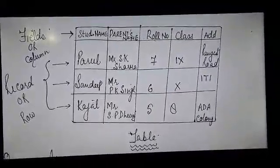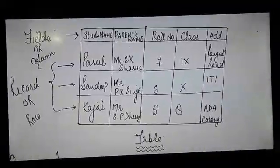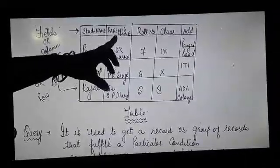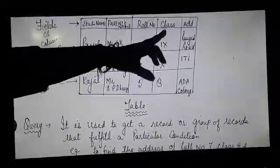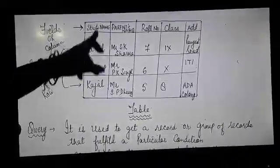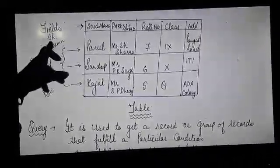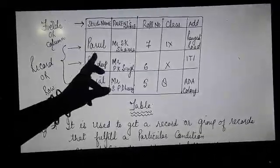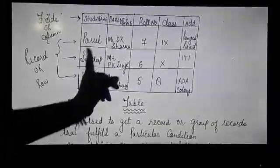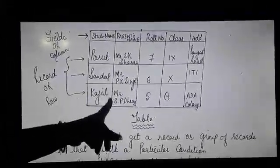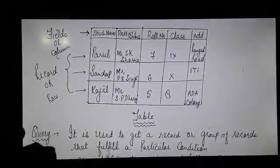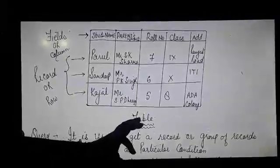See this table. I have explained it in the table format. You can see there is student name, parents name, role number, class, and address. Now these are all known as fields, and also these are columns. So fields are known as columns. Now suppose I am writing Parul — the student's name, parents name, role number — so this becomes the record. You can see we have a record for Parul, Sandeep, and Kajal. So records are known as rows and fields are known as columns. So this is all known as the table.